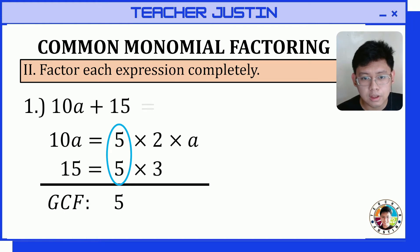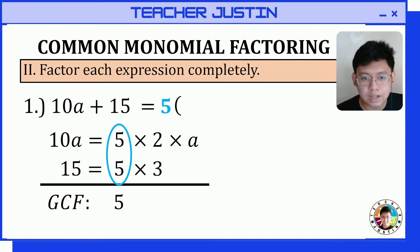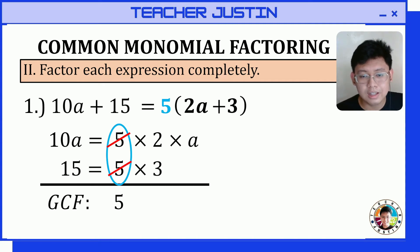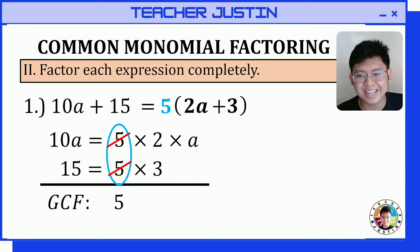In common monomial factoring, since we have a GCF, we will factor that out — 5 — and divide each term by that greatest common factor. It's like removing the common factor from each term. For 10a, removing 5 leaves 2a. For 15, removing 5 leaves 3. So the factor of 10a plus 15 is 5 times the quantity 2a plus 3.